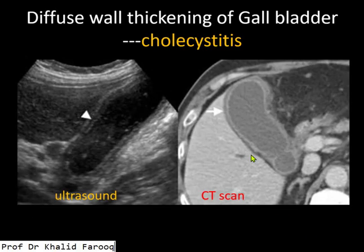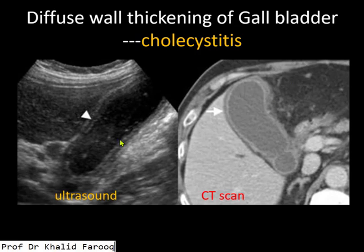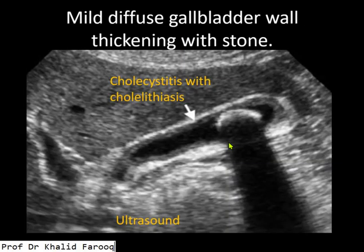Here we have ultrasound and here we have CT scan. We can see that there is diffuse wall thickening on both ultrasound and CT scan, and here we have inflammatory changes in the pericholecystic space. So these two represent cholecystitis.